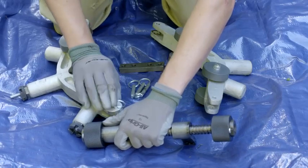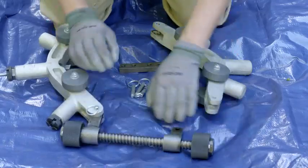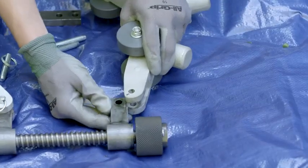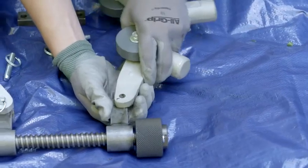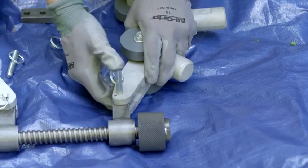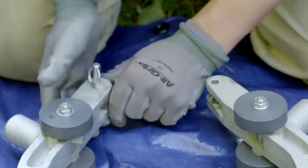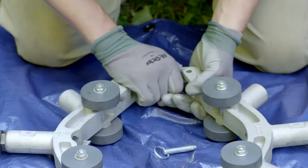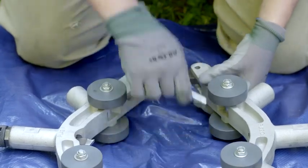First, we assemble section A to the screw assembly, then assemble section C to the screw assembly. Finally, connect section A and C together using the link.